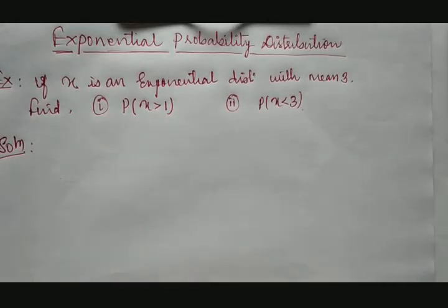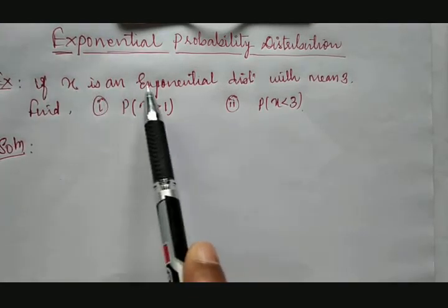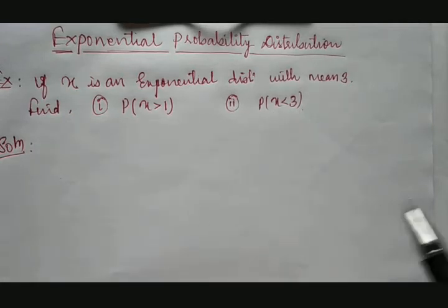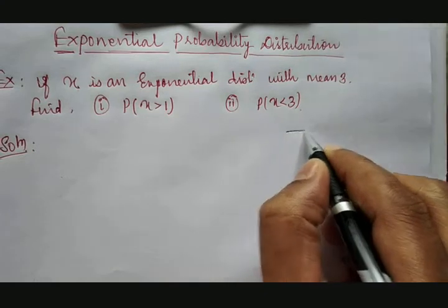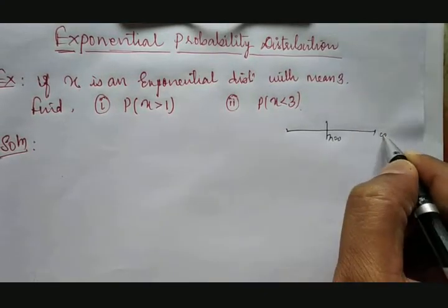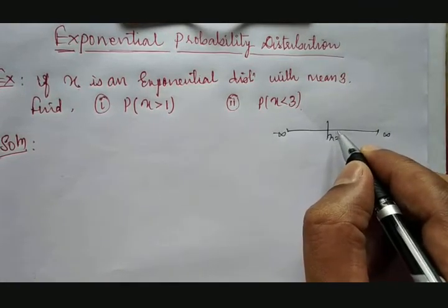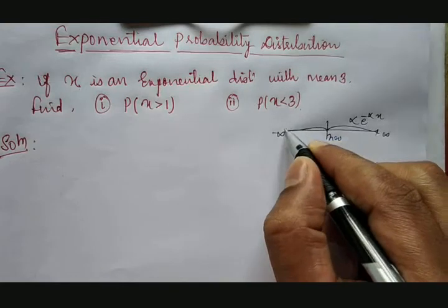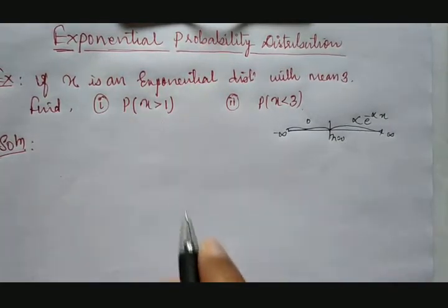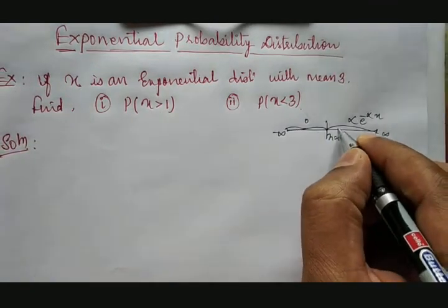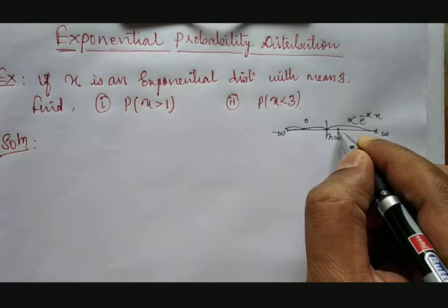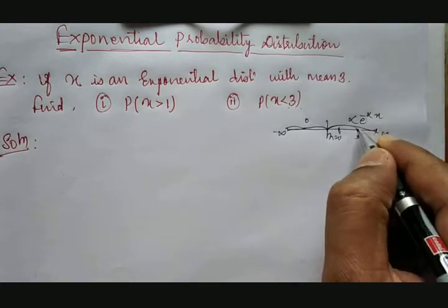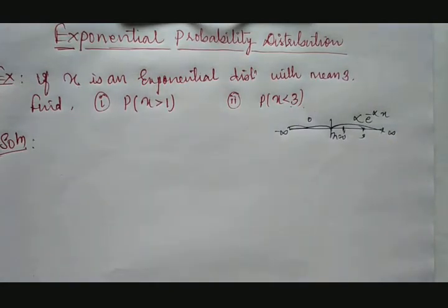Let us go through the example now. If x is an exponential distribution with mean 3, find: the probability of x greater than 1, and the probability of x less than 3. We know the exponential distribution works from 0 to infinity, where f(x) = α · e^(−αx). We are calculating P(x > 1), meaning from x = 1 to infinity, and P(x < 3), meaning from 0 to 3.